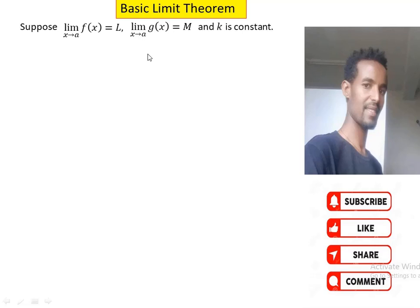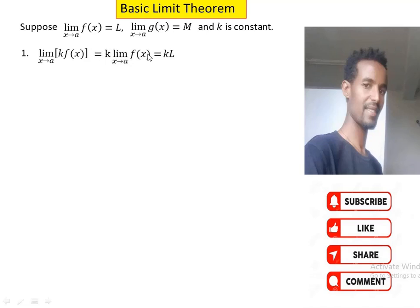Rule 1, the first basic limit theorem, is the scalar multiple rule. That means the limit of k times f(x) as x approaches a is the same as k times the limit of f(x) as x approaches a. Since the limit of f(x) as x approaches a is L, we then have k times L.